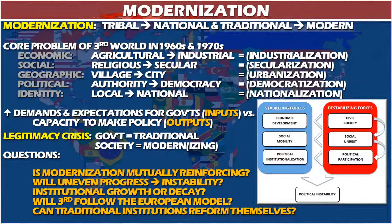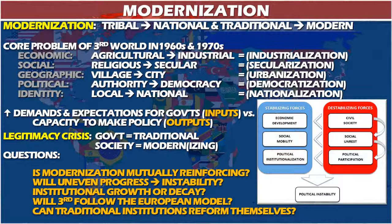Some people once thought modernization only went in one direction — from traditional to modern and never backward. But some societies actually fell apart and fell backward. Another question is whether the Third World would follow the European model: could those newly independent countries in the 50s and 60s follow what happened in 19th-century Europe and the United States? Could traditional institutions based in traditional legitimacy — whether tribal or monarchies — reform themselves to take advantage of these new modern forces?